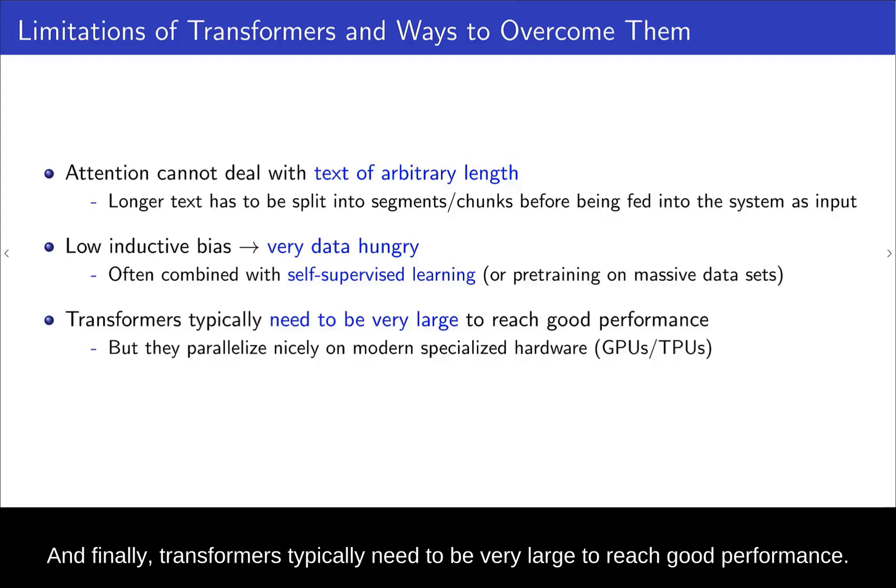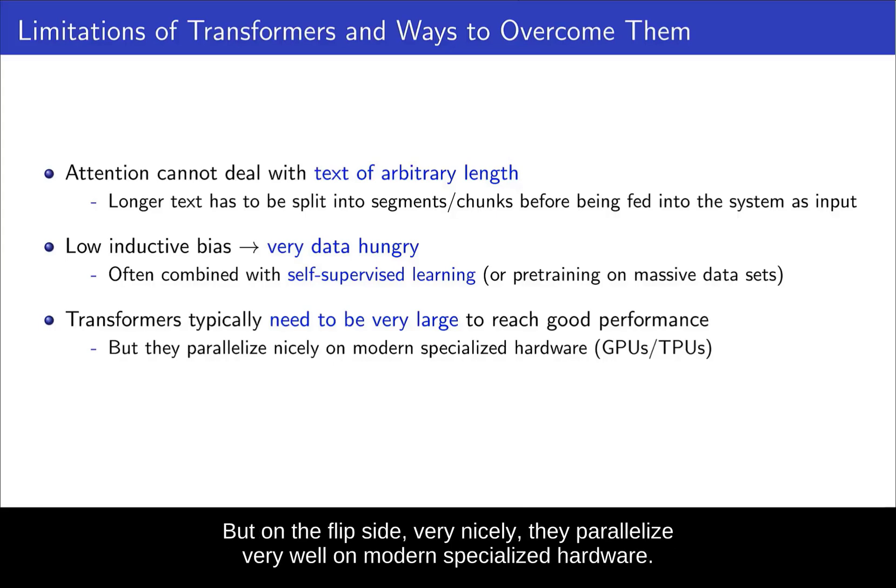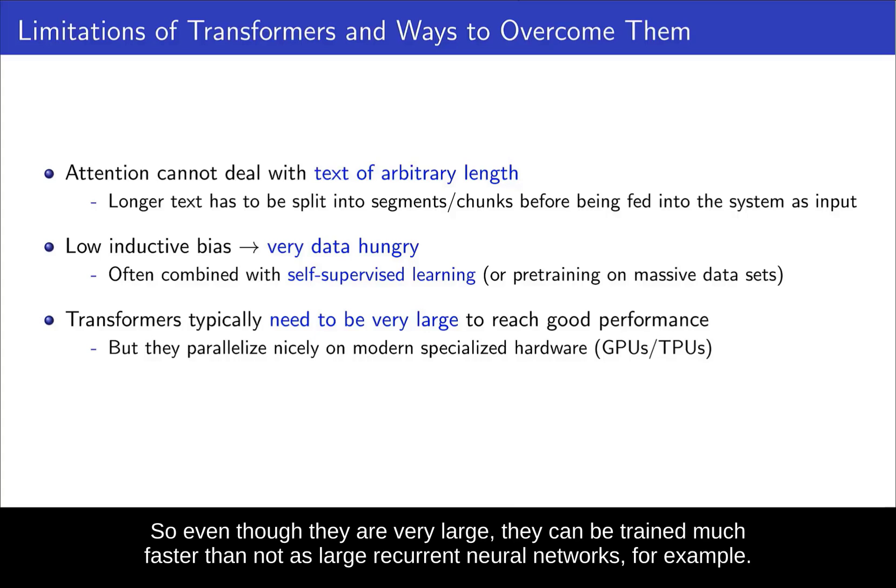And finally, transformers typically need to be very large to reach good performance. But on the flip side, very nicely, they parallelize very well on modern specialized hardware. So even though they are very large, they can be trained much faster than not as large recurrent neural networks, for example.